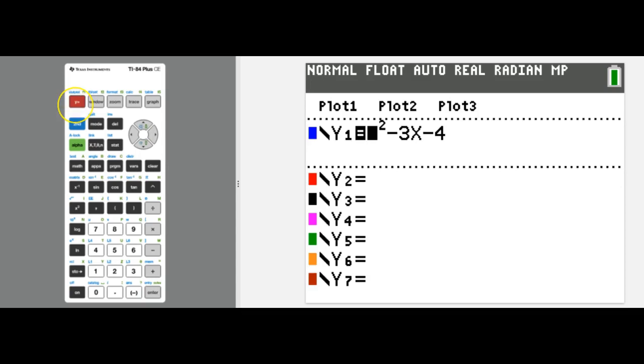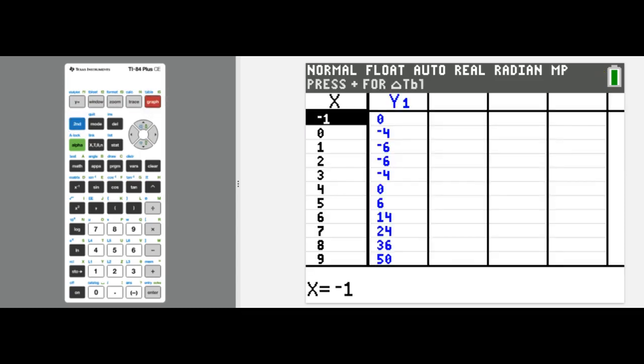So I'm going to go to y equals, and I've already typed in the function here, and now I'm going to go to the table. So I'm going to press second graph. And I just need to find the numbers that are on my table.